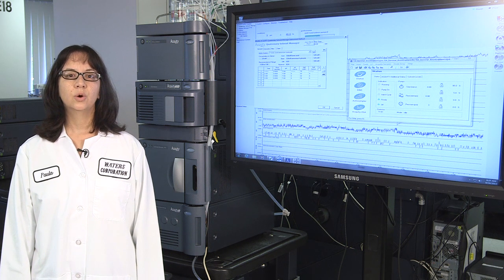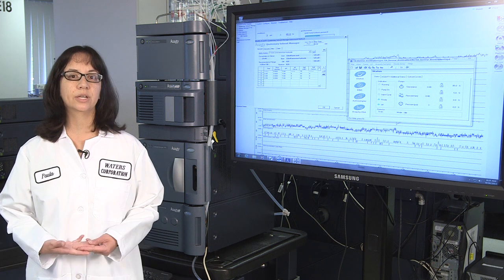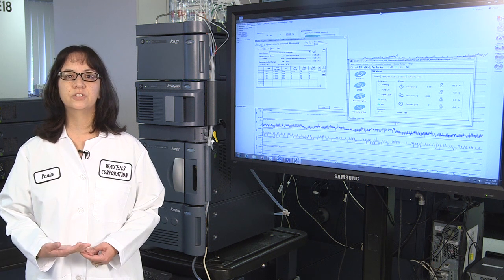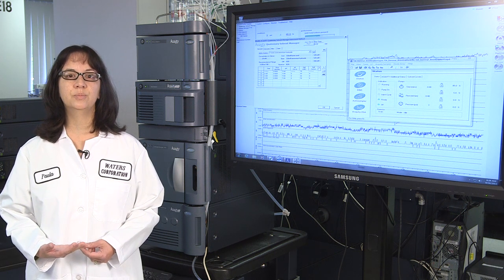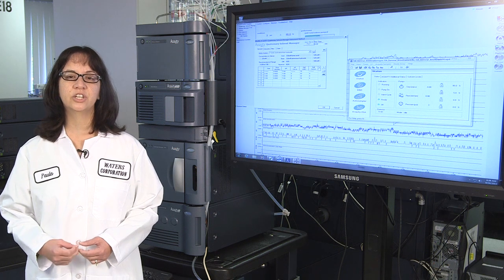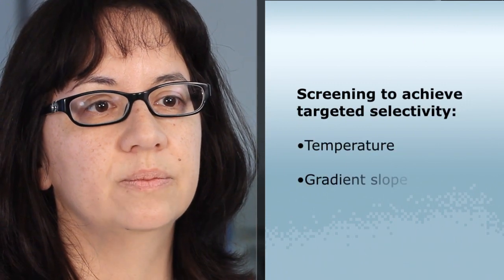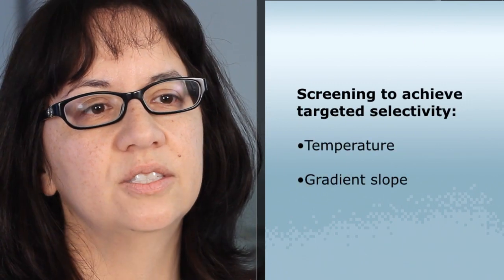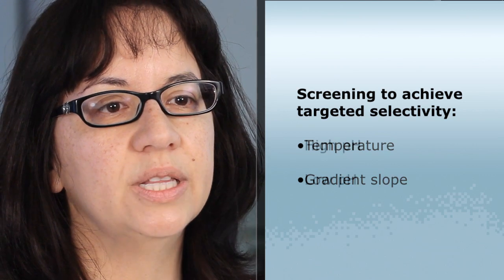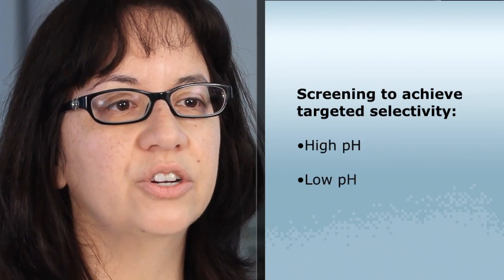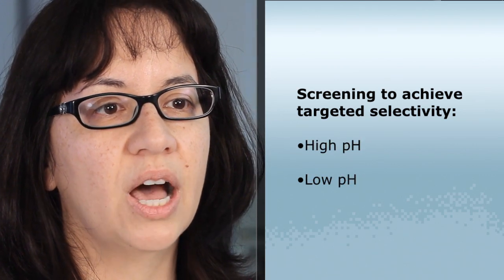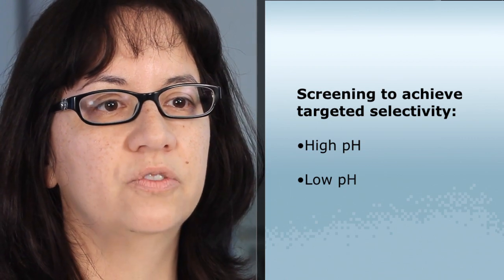Over the years we've all become very good at screening through organic solvents and reverse phase columns with different properties to achieve our targeted selectivity. We routinely adjust temperature and gradient slope to improve resolution. In many cases we take advantage of the stability of modern columns to screen both high and low pH mobile phases.